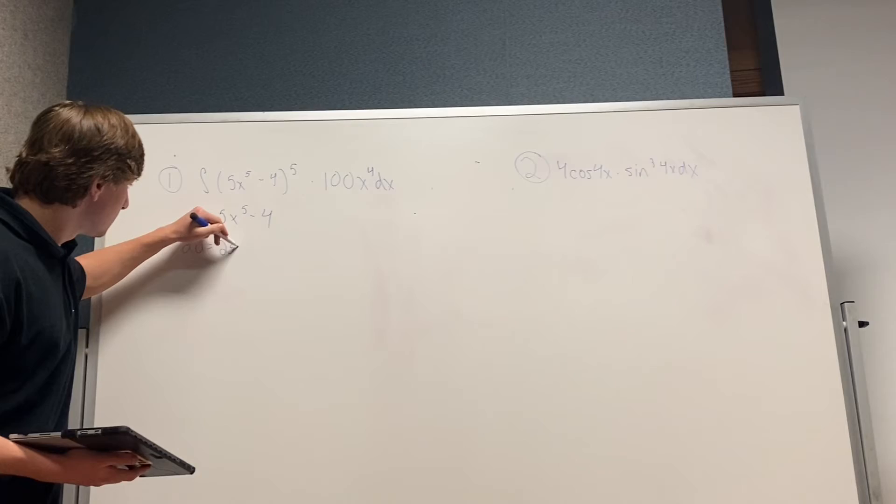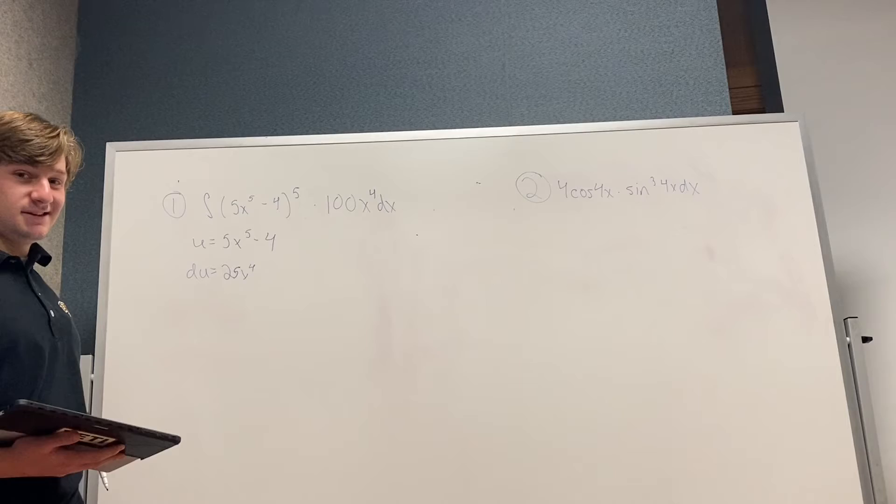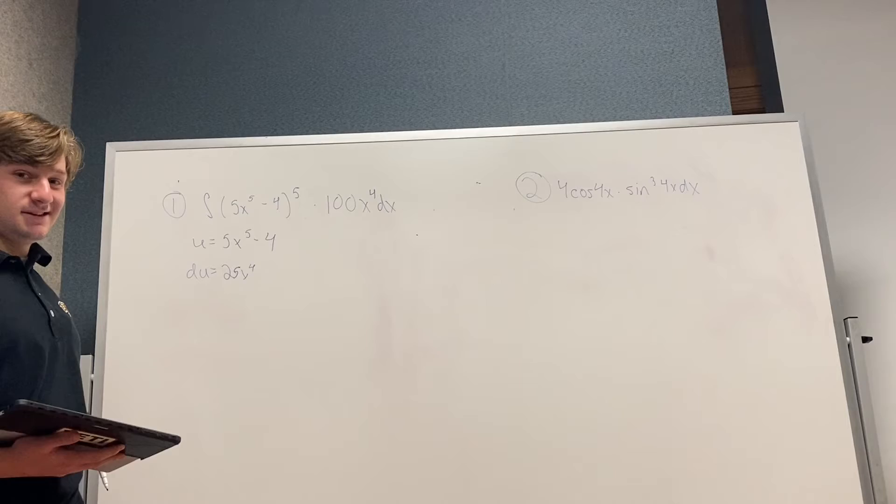And then what's your last step for this part? You need to multiply by 4 to make it equal to 100x to the 4th dx, so it's 4du equals 100x to the 4th dx. That is perfect.